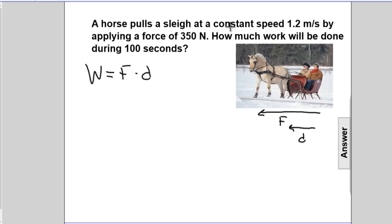And we know that it says a horse pulls a sled with a constant speed of 1.2 meters per second with a force of 350 newtons for a time of 100 seconds.